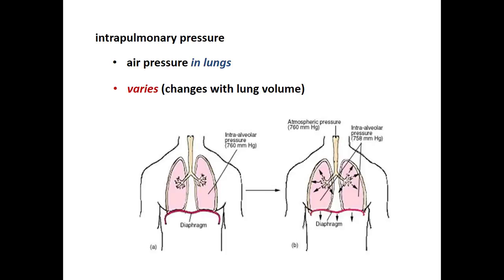To illustrate: when your diaphragm is relaxed after exhaling, the pressure in the alveoli will be the same as atmospheric pressure — 760 mmHg. But when you contract your diaphragm and it drops, that increases lung volume, and those same air molecules are now in a larger space, so intrapulmonary pressure drops slightly from 760 to 758 mmHg — a big enough drop to pull air into the lungs.